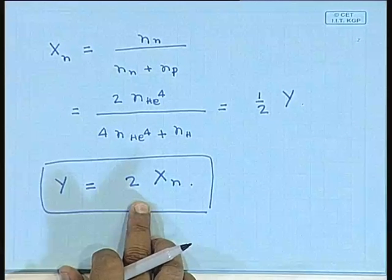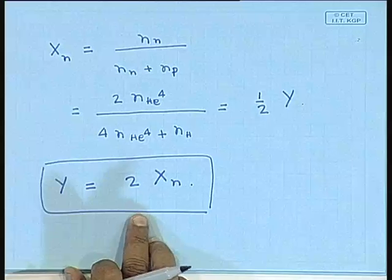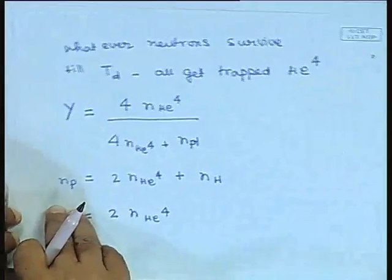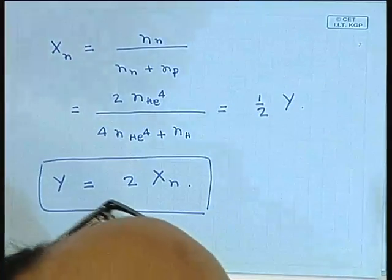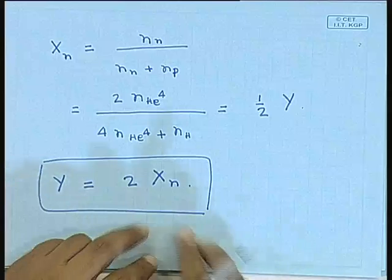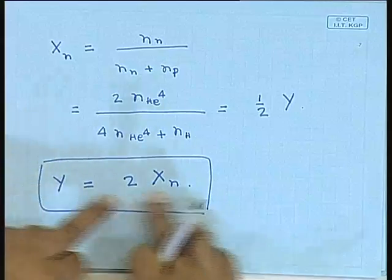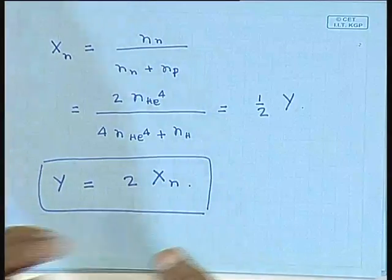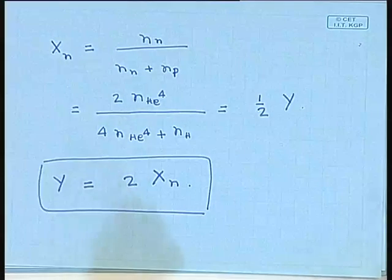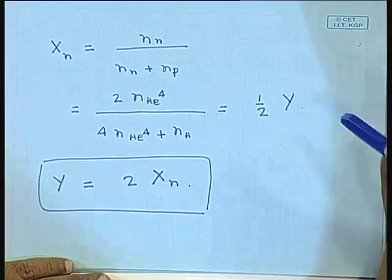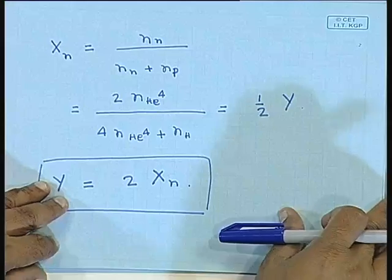We have already calculated how x_n behaves; I showed you a table of values as a function of temperature and time. This is essentially the neutron fraction at the epoch when all neutrons get converted into helium — roughly the temperature corresponding to the deuteron binding energy, though actually slightly higher than that.